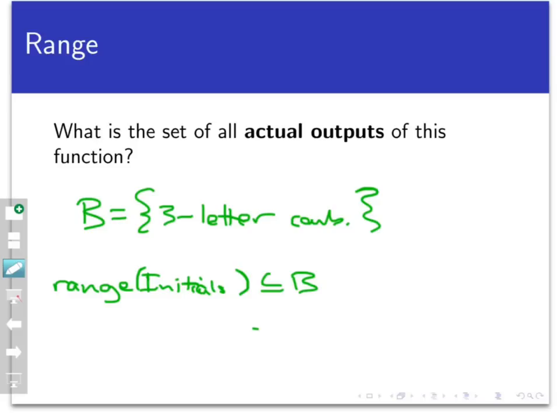But it may not be equal. We don't know if those two sets are equal or not. So the question here is, are there any three-letter combinations in the codomain that do not appear as actual outputs of the function?